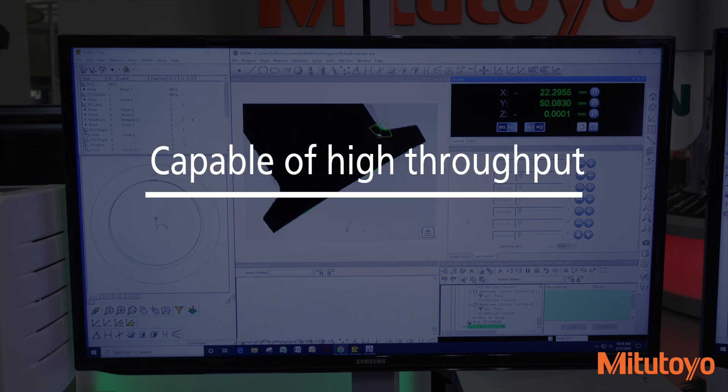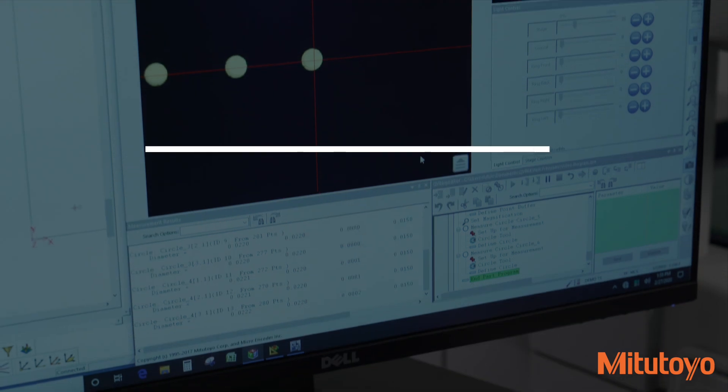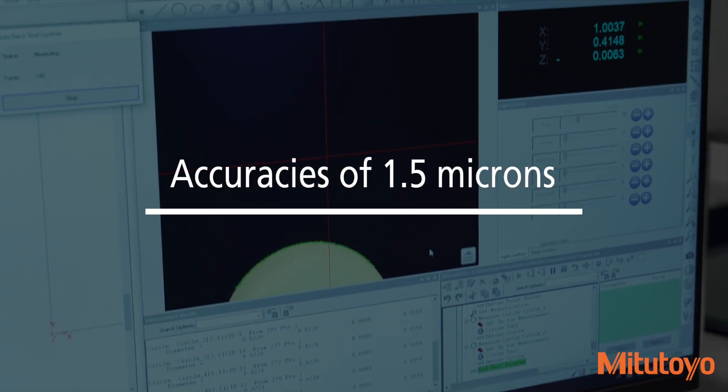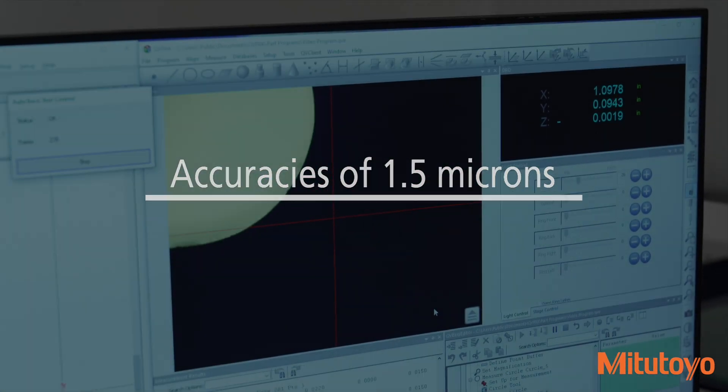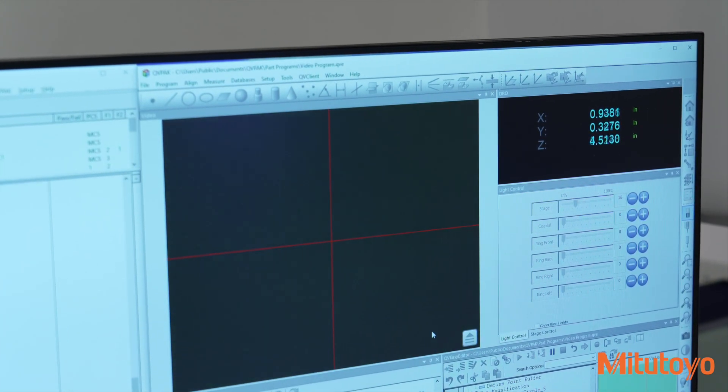The Quick Vision series is capable of high throughput, with sample rates reaching hundreds of thousands of data points in seconds, with standard accuracies of 1.5 microns, ensuring that you meet the most stringent efficiency and quality requirements your customers require.